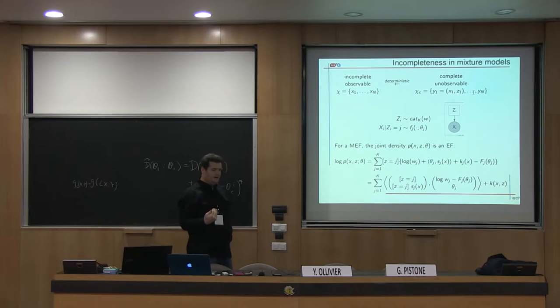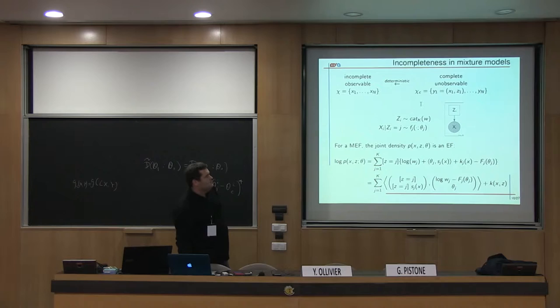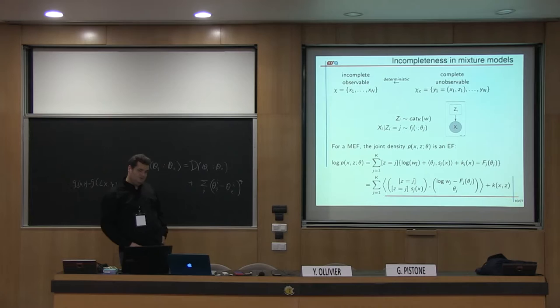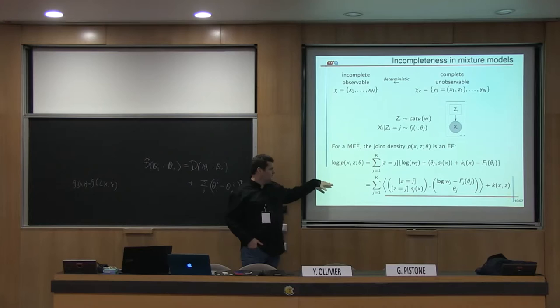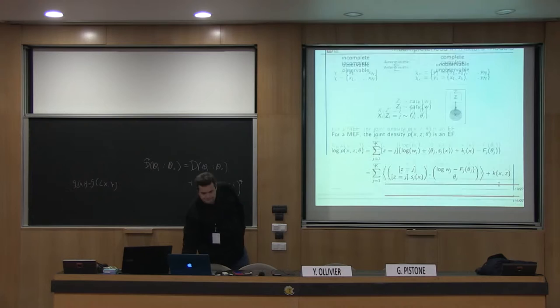This indicates which component has to generate which point. I just mentioned Z is a latent variable distributed as a categorical variable with parameter W, and the conditional distribution of X given Z is the component. With this setting, for a mixture of exponential families, the joint density is also an exponential family. I put the decomposition here. You can recognize here the sufficient statistic for the complete data and the natural parameter.